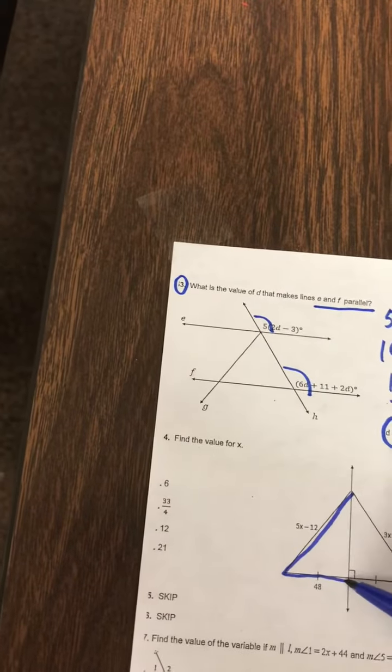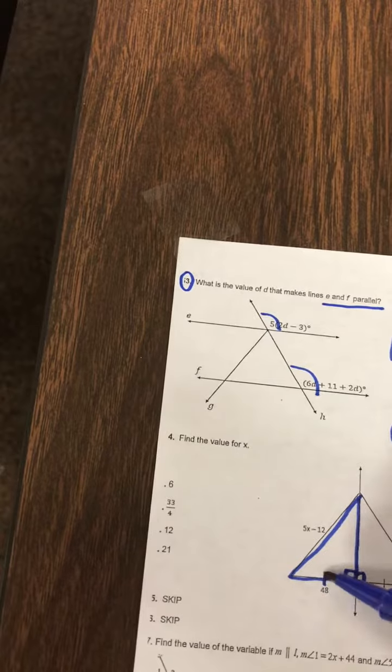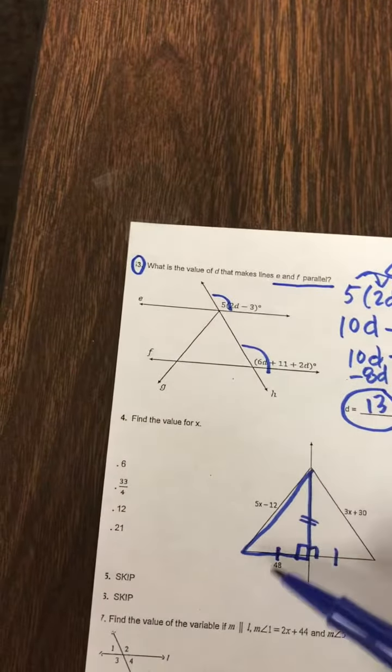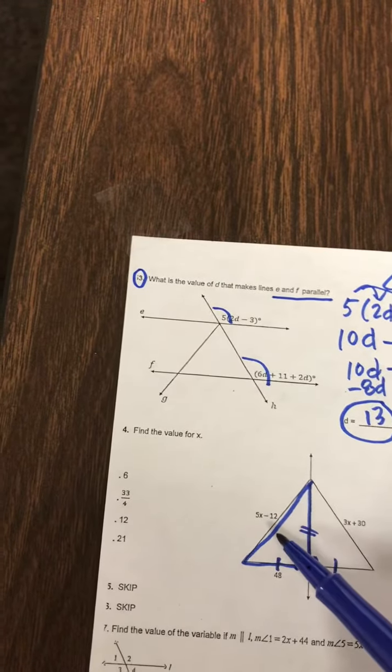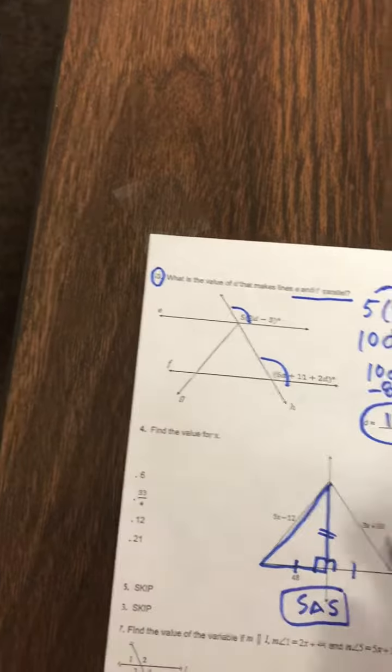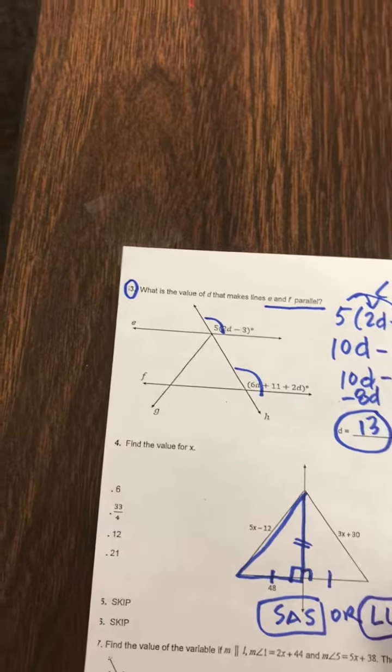So this is kind of a congruent triangle theorem question. We believe that this triangle here would be 90 and that would be 90. And this side matches this side. And we know this side and this side match because of reflexive. So this triangle has to equal that triangle because it's side angle side.